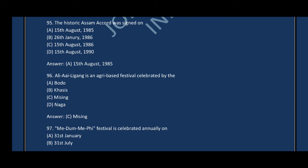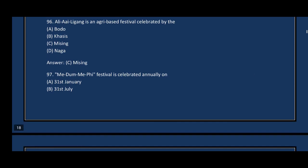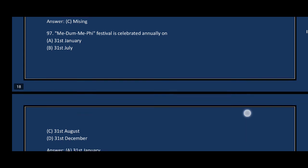Question number ninety-six: Ali-Ai-Ligang is an agri-based festival celebrated by the — the correct answer is option C, Missings. Question number ninety-seven: Magh Mela Festival is celebrated annually on — the correct answer is option A, 31 January.